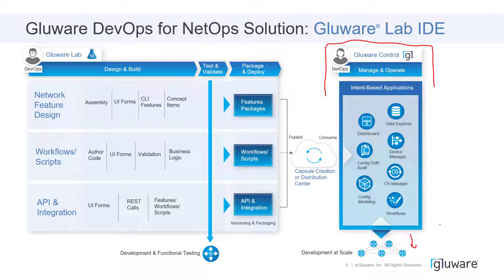The answer is Glueware Lab. Glueware Lab is something we've made available in the marketplace to our customers who have the capability for what we would consider low-code. All you need is a skill set of some lightweight JSON data modeling and a little bit of JavaScript programming.